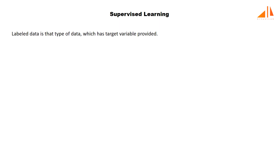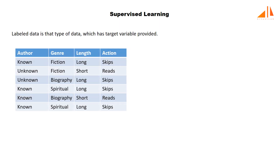Let's first understand the supervised learning algorithm. From the previous tutorial, labeled data is that type of data which has a target variable provided. Let's carefully look at this dataset. It displays the mindset of a reader towards a book based on factors like whether the author is known or unknown, what is the genre, and whether it's a short book or a long book. The last column holds the action taken by the reader on previous books, also called the label column or target column.